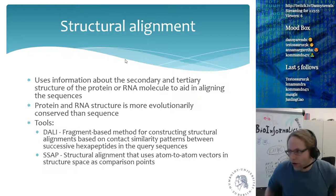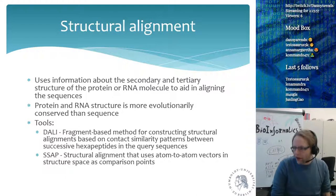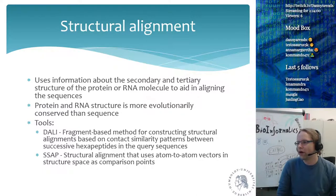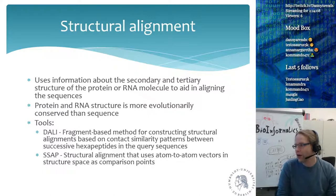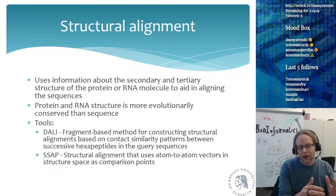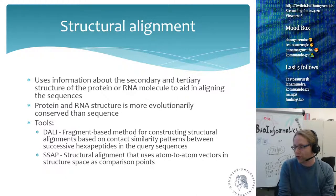Structural alignment is the third part of how you can align sequences. It uses information about the secondary and tertiary structure of a protein or RNA molecule to aid in alignment. Protein and RNA structure is more evolutionarily conserved than the sequence — we already saw this when looking at conservation at the DNA level versus the protein level.